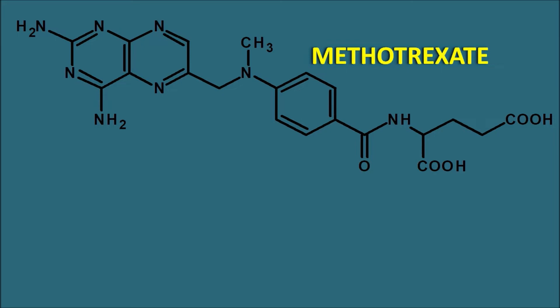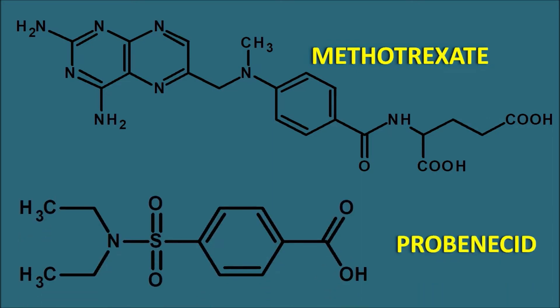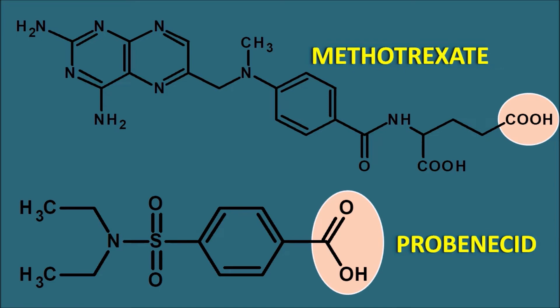Methotrexate is an anti-folate having structural similarity to folic acid. Looking at the structure of Probenecid, it is a sulfonamide with a carboxylic acid attached to a phenyl ring. These two drugs are not structurally similar, but we can observe a similar functional group: Methotrexate has two carboxylic acid groups, and Probenecid also has a carboxylic acid group. This means both Methotrexate and Probenecid are organic acids.